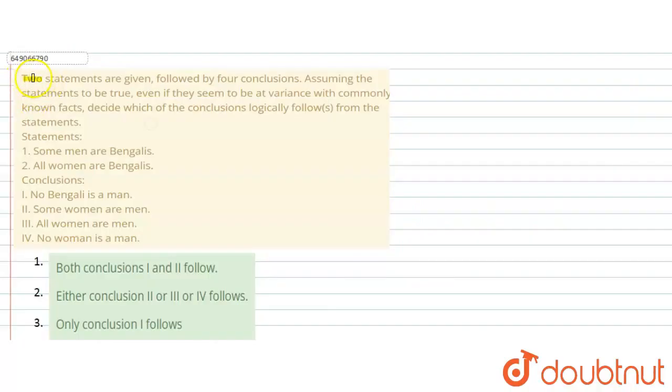The question says: Two statements are given followed by four conclusions. Assuming statements to be true, even if they seem to be at variance with commonly known facts, decide which of the conclusions logically follows from the statements.